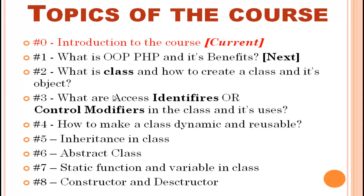In the fourth part I will tell you how to make a dynamic class and how to make it reusable by creating many objects. After that, in the fifth part we will learn about inheritance — how we can copy one class to another, or use another class's variables and properties in a second class. We will also learn about abstract class.